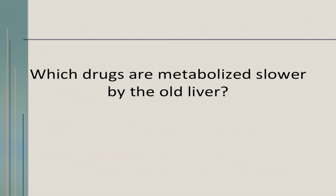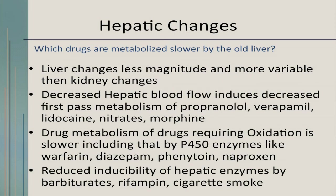Older people also metabolize drugs slower in their liver. The GI tract is the least affected organ system by aging, but we do see a problem with drug metabolism. There is decreased hepatic blood flow, decreased first-pass metabolism of drugs like propranolol, verapamil, or morphine, and drugs requiring oxidation are metabolized more slowly — including those mediated by the CYP450 enzyme systems such as warfarin, phenytoin, or even over-the-counter naproxen. There's also reduced inducibility of hepatic enzymes by barbiturates, rifampin, and even cigarette smoke.